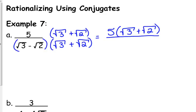On the bottom, square root of 3 times the square root of 3 is 3. The outside and the inside cancel. That's the purpose of multiplying by the conjugate. Positive times the negative is a negative. Square root of 2 times the square root of 2 is 2. So 3 minus 2, that's just 1. And so this simplifies to 5 times the square root of 3 plus the square root of 2.